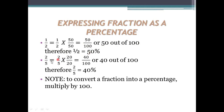Next, 2 by 5. Multiply 5 by 20 to get 100, so multiply the numerator also by 20: 2 times 20 is 40. So that means 40 out of 100, therefore 2 by 5 equals 40 percent. Note: to convert a fraction into a percentage, multiply by 100.